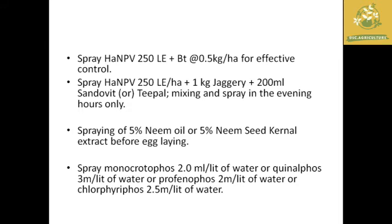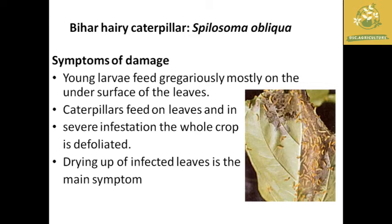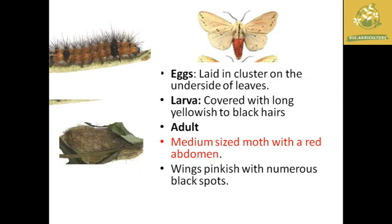The next important pest is the Bihar hairy caterpillar in sunflower, with scientific name Spilosoma obliqua. The young larvae feed vigorously on the undersurface of the leaves, and older caterpillars feed on the leaves causing defoliation in heavy infestation; drying up of infested leaves is the main symptom. For identification: eggs are laid in clusters on the underside of leaves; larvae are covered with yellowish to black hairs; the pupa is a compact pupa covered with hairs; the adult is a medium-sized moth with a red abdomen and white wings with numerous black spots.